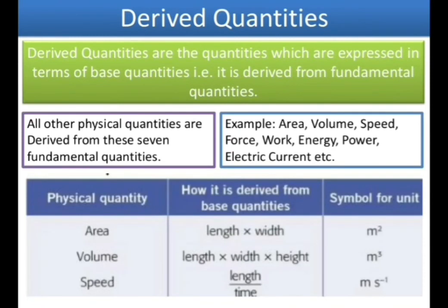The second type is derived quantity. As the word suggests, it is derived from something else. Derived quantities are quantities expressed in terms of base quantities — they are derived from the fundamental quantities. Examples include area, volume, speed, force, work, energy, power, and electric current. These are all examples of derived quantities, which we derive from other quantities and express in terms of basic quantities.